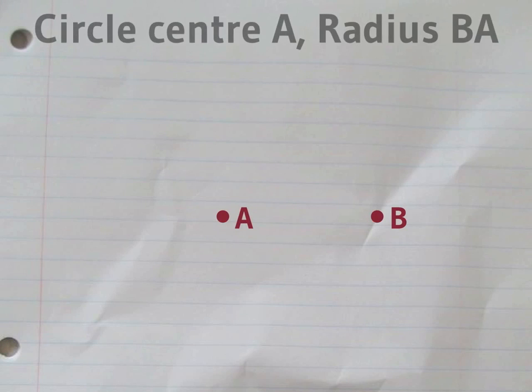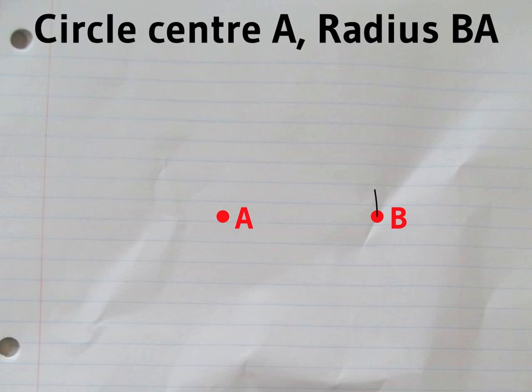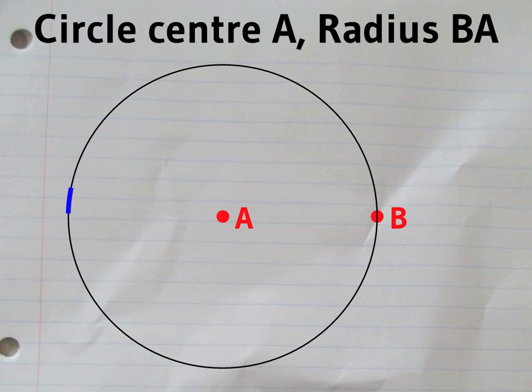First, you draw a circle centered on A, radius AB. We're going to make the nonagon inside this circle.